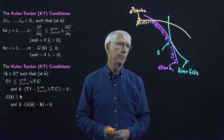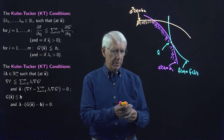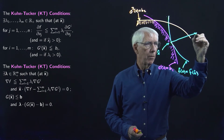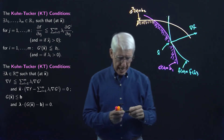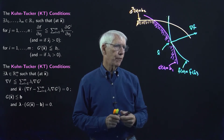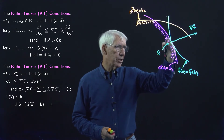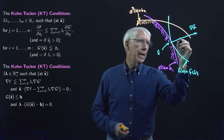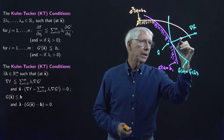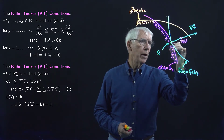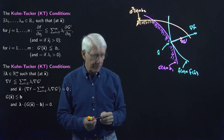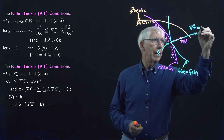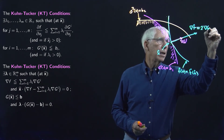The gradient of the objective function looks like this. The gradient of the first constraint function points in exactly the same direction because there's a tangency between the level curve of F and the constraint. So gradient F is actually equal to about 2 times the gradient of G1.